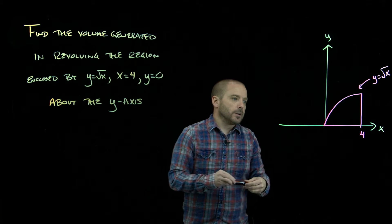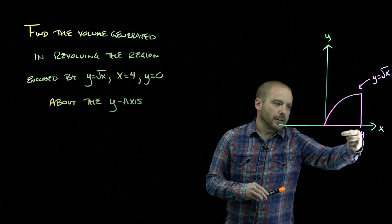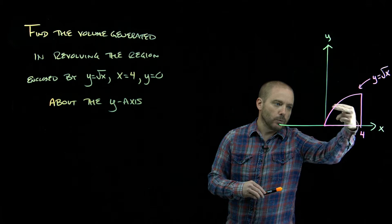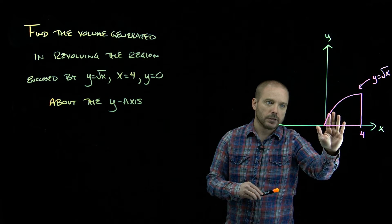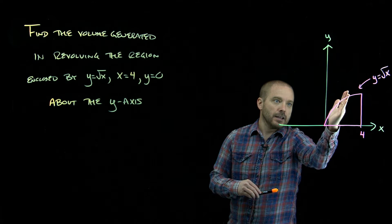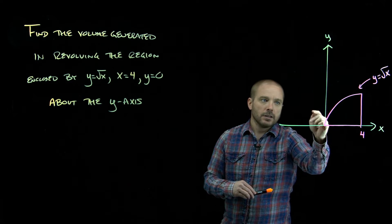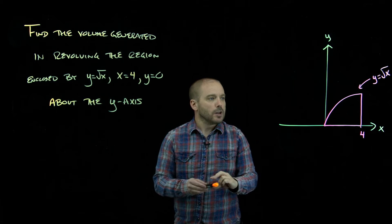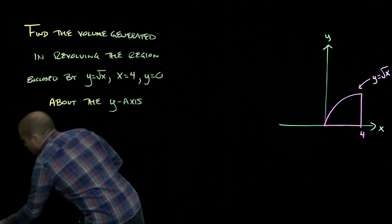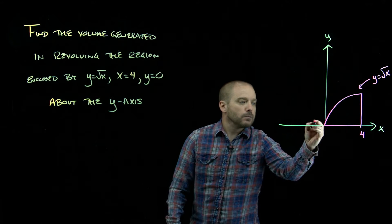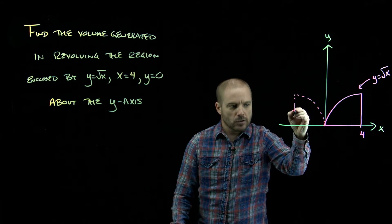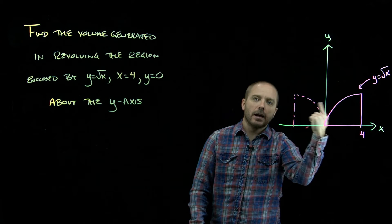The first thing to notice is that when we went around the x-axis, this region was butted right up against the x-axis, so when we revolved it, we got a solid object. But now this curve here — the closest curve to the y-axis — is not right up against it, so when we revolve it, we're going to generate a hole. So we'll start by making a sketch of a mirror image across that axis of revolution.